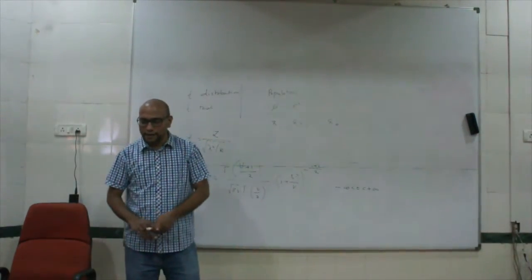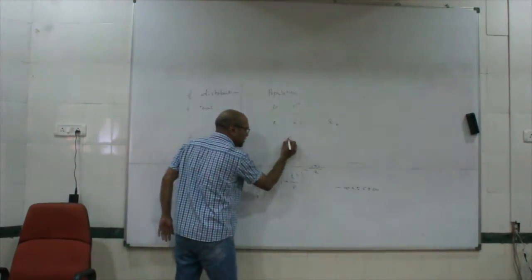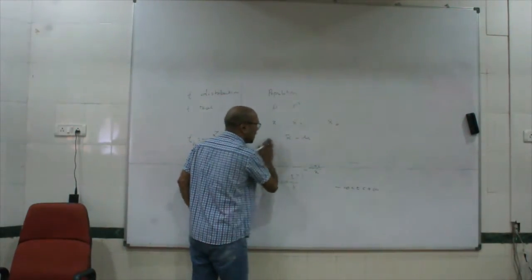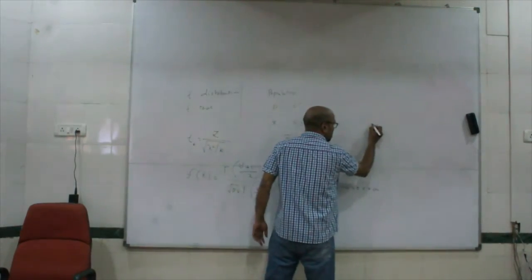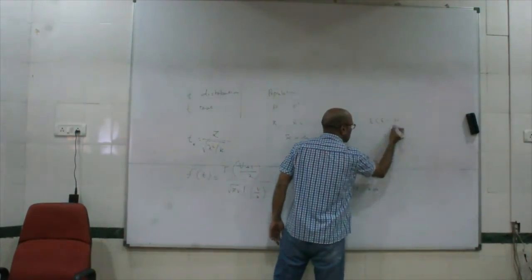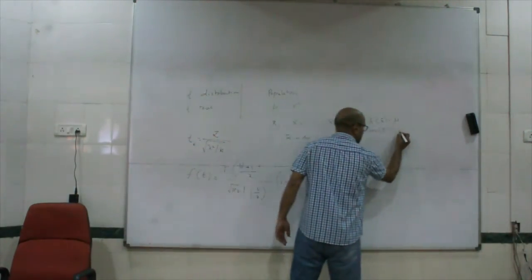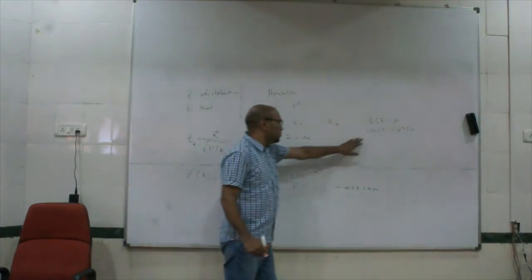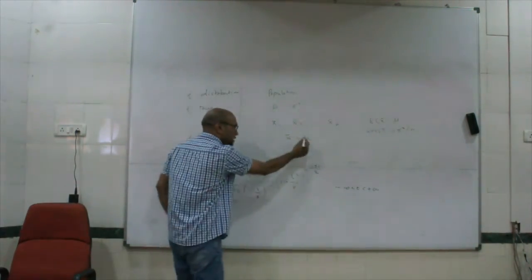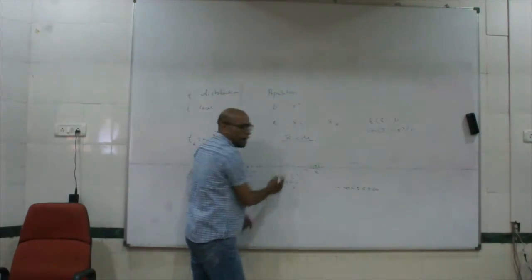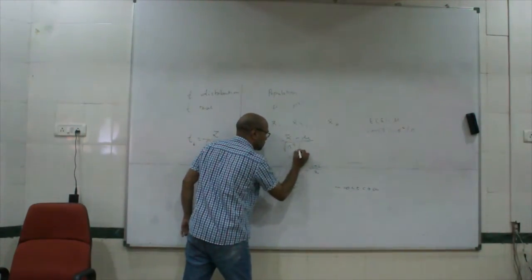Suppose I take x-bar. The expectation of x-bars would be mu, and the variance of x-bar would be sigma-squared upon n. Now, if this is the variance of the distribution of x-bars and this is the mean of the x-bars, then x-bar minus its mean, divided by the square root of the variance — that is, the square root of sigma-squared upon n — will be z.